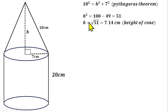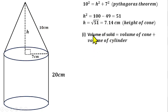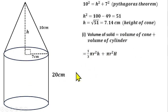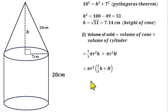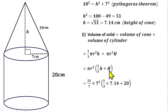Now to get the volume of the solid, that is the volume of the cone plus the volume of the cylinder: (1/3)πr²h + πr²H. We can factorize πr², giving πr²(h/3 + H). Substituting: π = 22/7, r = 7, h = 7.14, H = 20. So (22/7) × 7² × (7.14/3 + 20) = 22 × 7 × (2.38 + 20).